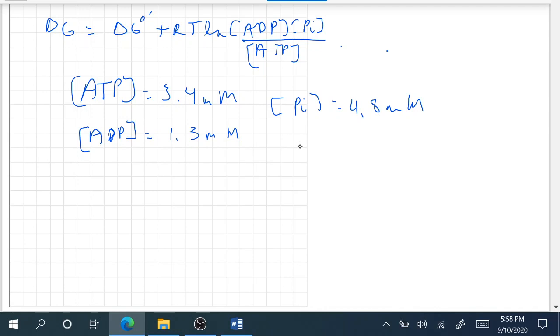And we found that the Delta G naught prime is negative 30.5 kilojoules per mole.